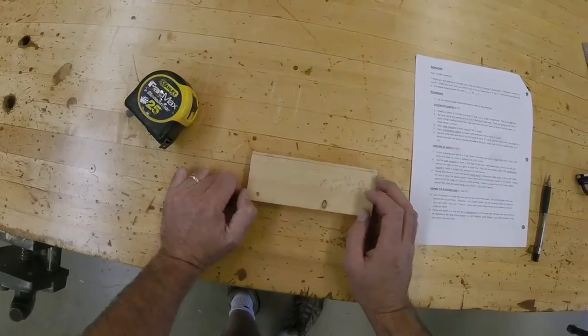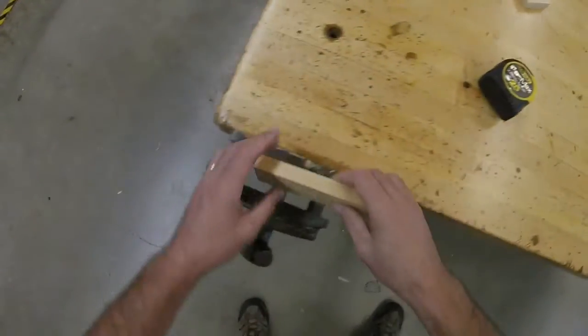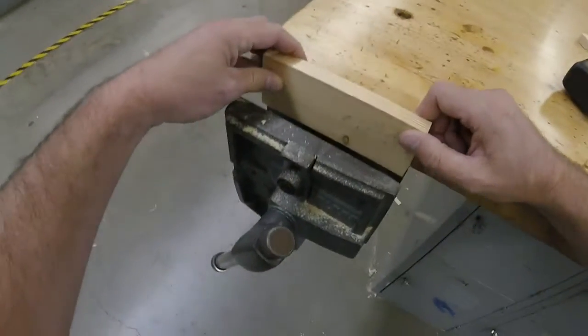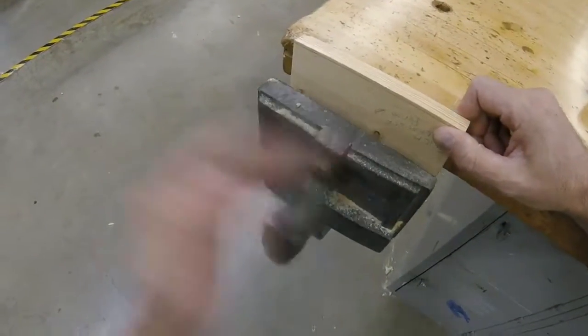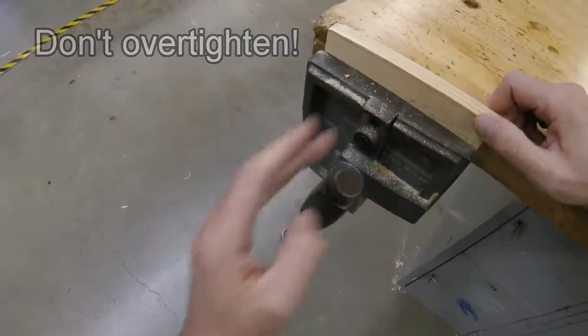Step nine, clamp the board in a vise, and use the block plane to shave the board down to the two and three-eighths inch mark. Here's my bench vise. I'm going to set that in there like so. Tighten this down. Not too tight.